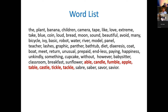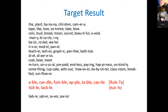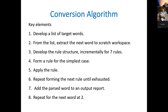The word list starts with 'banana,' 'apple,' 'children,' and so on down to 'savor' and 'savior.' I've highlighted in red the words affected by rule seven: 'able,' 'candle,' 'fumble,' 'apple,' 'table,' 'castle,' 'tickle,' and 'tackle.' The result shows the syllable formation for the entire word list, with the words affected by rule 7a and rule 7b broken out and highlighted.